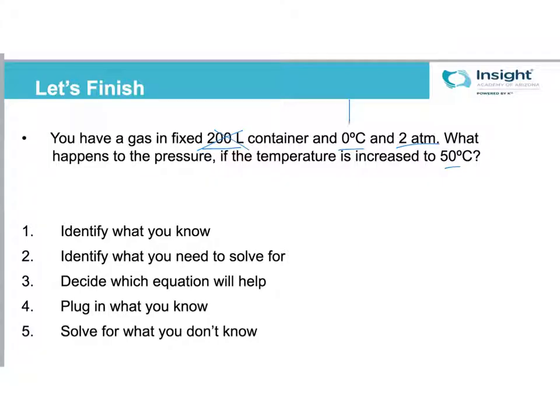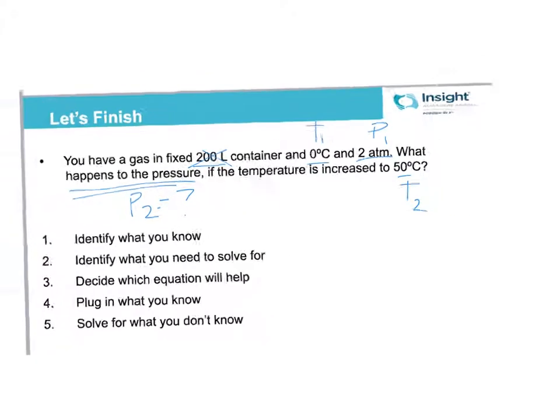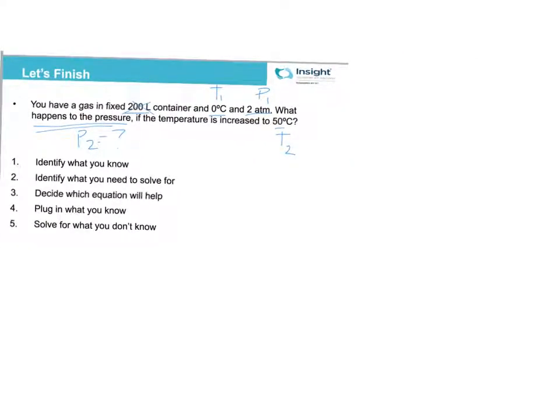But we do have a T1 and a P1 and a T2 and a what happens to pressure. So P2 is our question mark. I know I'm going to need more space. So first two done, the equation is going to help. We've got changing pressures and temperatures, so that's going to be Gay-Lussac. So we're going to use P1 over T1 equals P2 over T2. I'm going to plug in what we know.